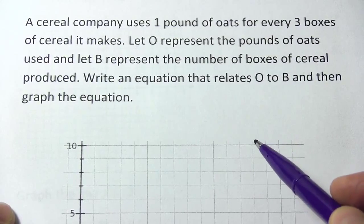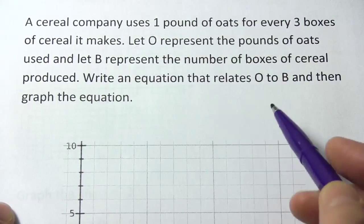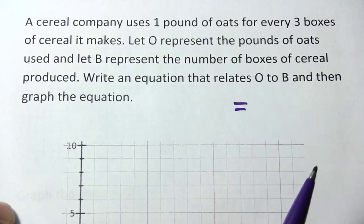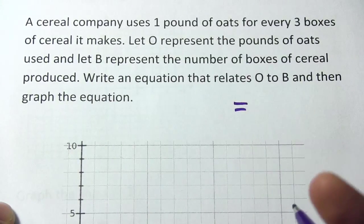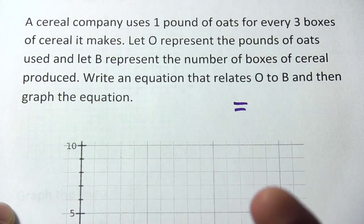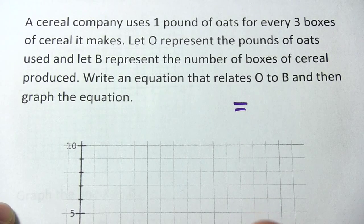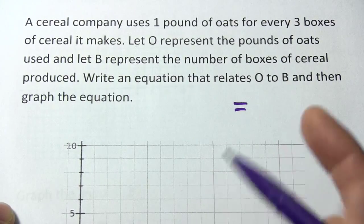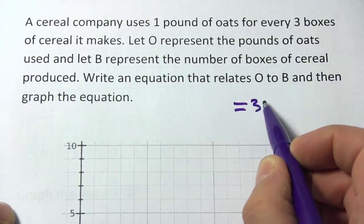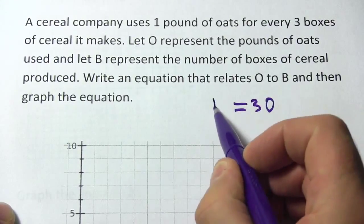Okay, so let's think about this. We're going to have B and O floating around in an equation, so there's going to be an equal sign. If I have one pound of oats, I get three boxes of cereal. So if I had the number of oats and multiplied it by three, that would equal B.